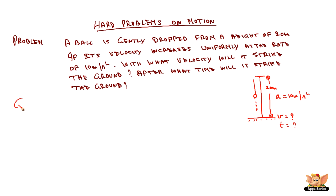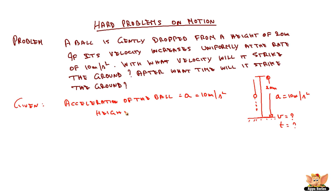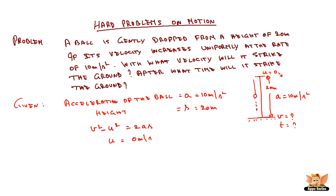Let's see what is the given data. Acceleration of the ball is given as a, which is 10 meters per second squared. The height at which the ball is being dropped, s, is equal to 20 meters. From the third equation of motion, v squared minus u squared is equal to 2as. In this case, the initial velocity u is equal to 0 meters per second at the beginning of the drop.